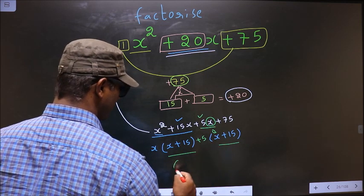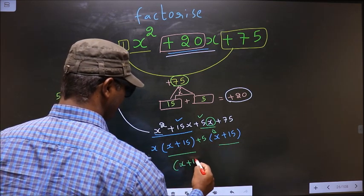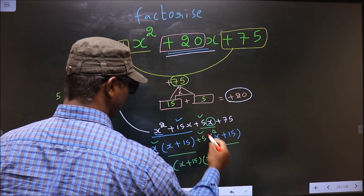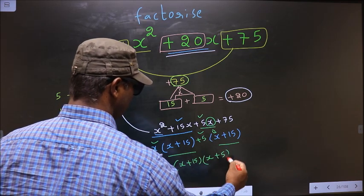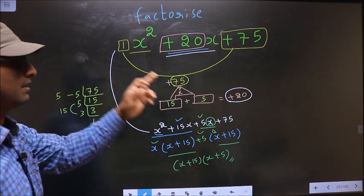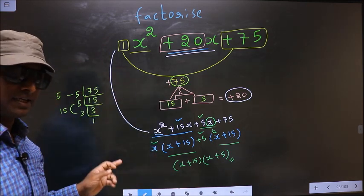Now you take out x plus 15 common. So here you have x and here you have plus 5. This is our answer. Am I clear?